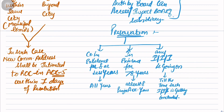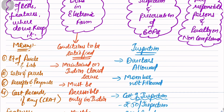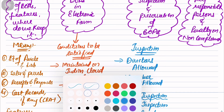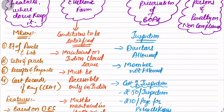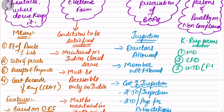Now let's proceed with the last thing: who are the key responsible persons for Section 128? Books of Accounts is the prime responsibility of management. The key responsible persons for compliance of Section 128 are: MD (Managing Director), CFO (Chief Financial Officer), and the whole time director of the finance department - not any other whole time director, specifically the whole time director of the finance department. These are the three key members who will be held responsible for Section 128.